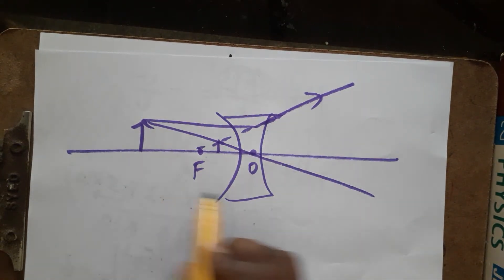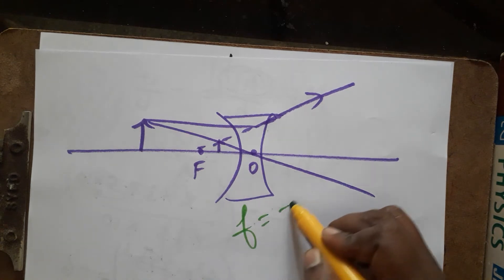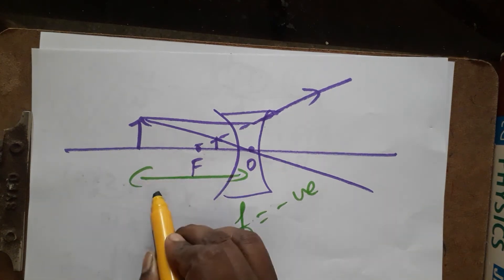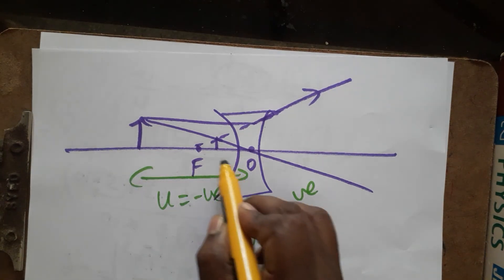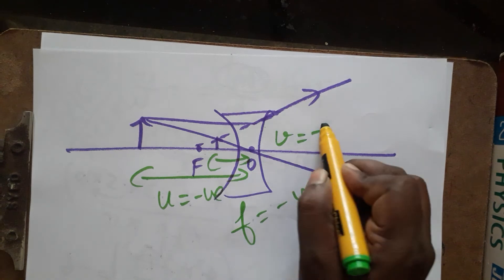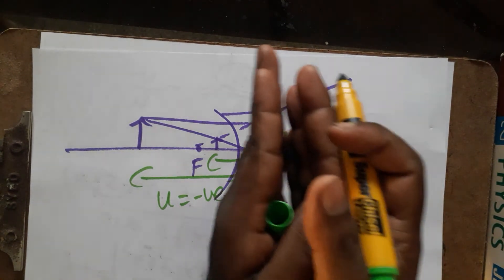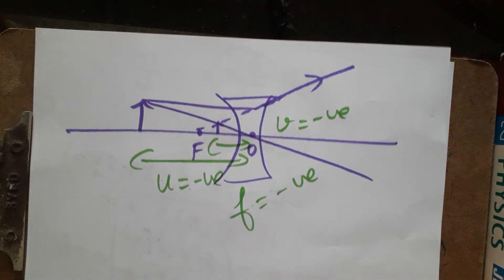For a concave lens, the focal length is negative. This applies to mirrors as well — concave is always negative. Both the image distance (v) and the object distance (u) are negative because they are on the left side of the optical center (pole).